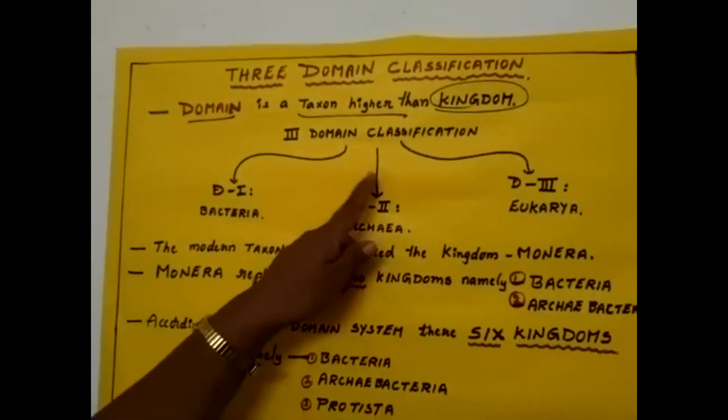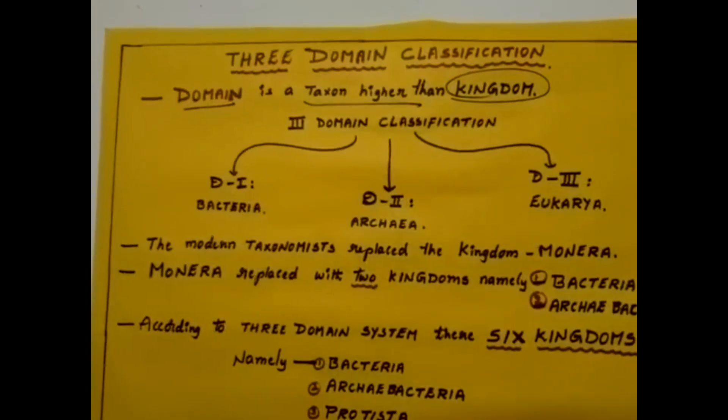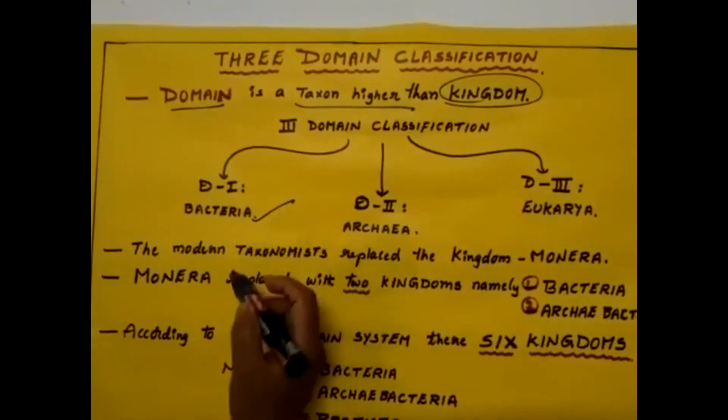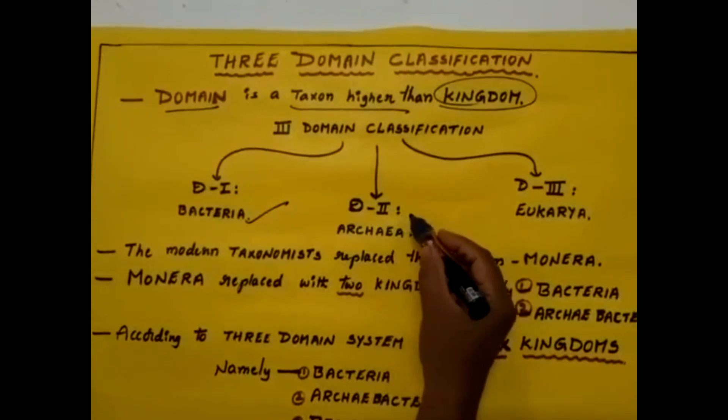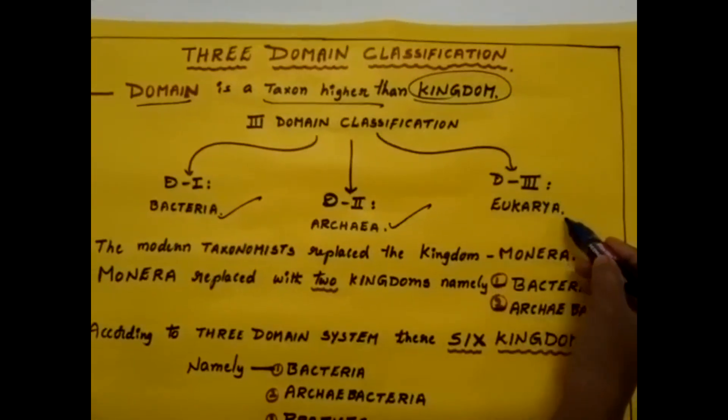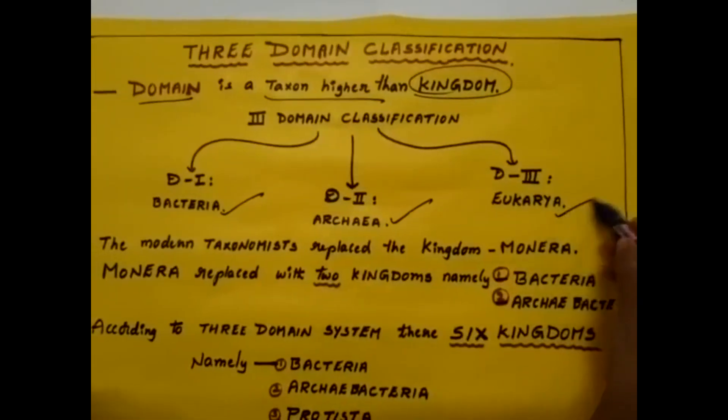In this 3-domain classification: Domain 1 is called Bacteria, Domain 2 is Archaea, and Domain 3 is Eukarya.